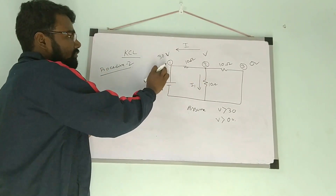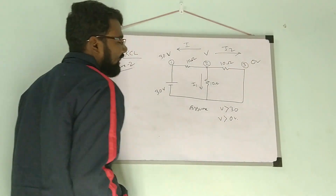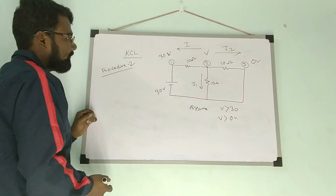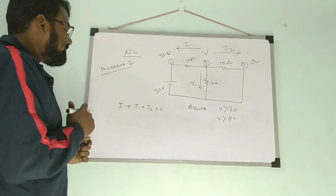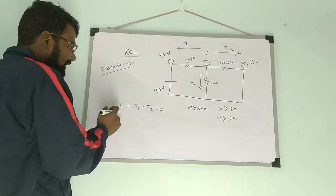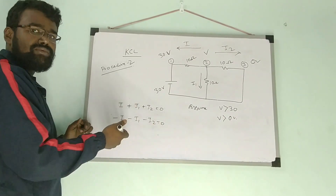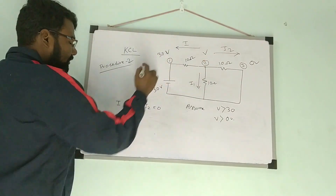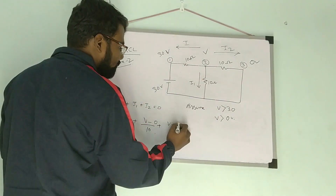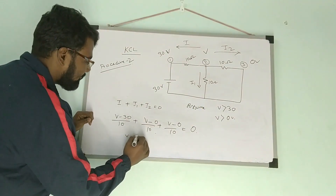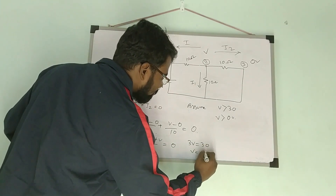The direction of current is from node 2 to node 1, and since V is greater than 0 volts, the direction of current is from node 2 to node 3. Applying KCL at node 2, all currents are outgoing, so we write: I plus I1 plus I2 equals zero. Substituting values: (V minus 30)/10 plus (V minus 0)/10 plus (V minus 0)/10 equals zero. So V minus 30 plus V plus V equals zero, giving 3V equals 30, so V equals 10 volts.